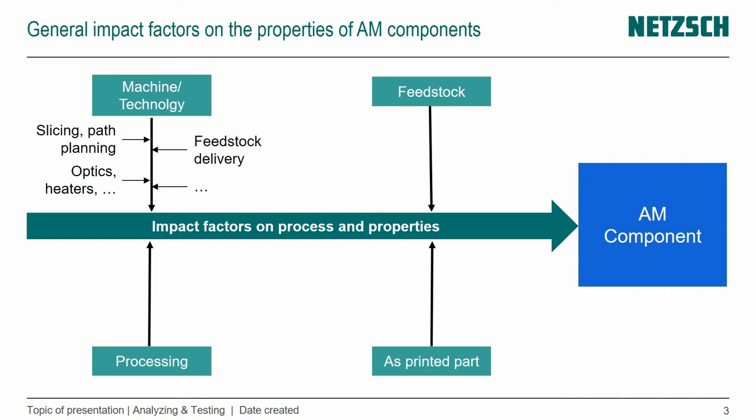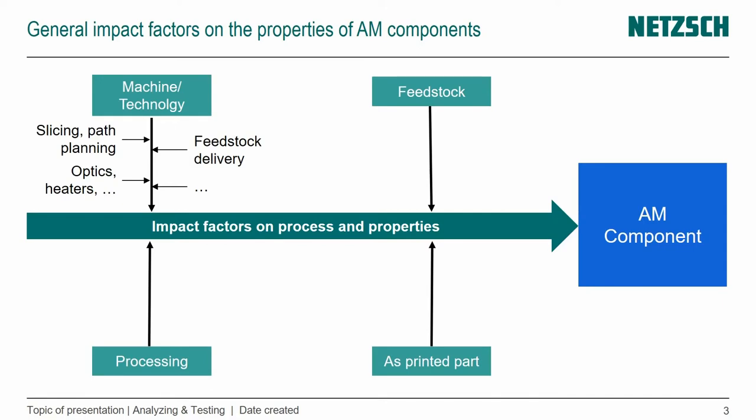Feedstock delivery means, for example, how do we deliver the powder in a powder bed fusion process? Is it out of a reservoir that's already heated to a certain temperature, or is it coming out of a chute? Those are important aspects that have an effect on the layer generation. And then we have the basic machine components like the optics of the laser, which laser we're using, how fast can we trace a certain geometry, and the heaters — such as infrared heaters in a powder bed fusion machine, or the heat cartridges inside a nozzle for material extrusion.